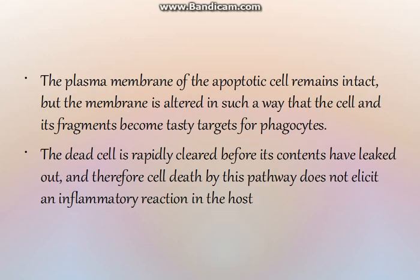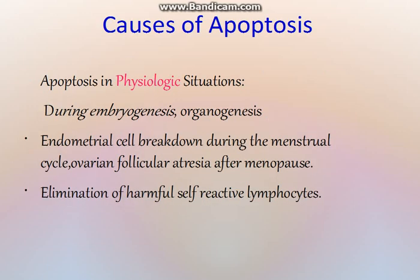The plasma membrane of the apoptotic cell remains intact, but the membrane is altered in such a way that the cell and its fragments become targets for phagocytes. Since the plasma membrane remains intact and the dead cell is rapidly cleared before its contents leak out, cell death by this pathway does not elicit any inflammatory reaction in the host, in contrast to necrosis where there is an inflammatory reaction.